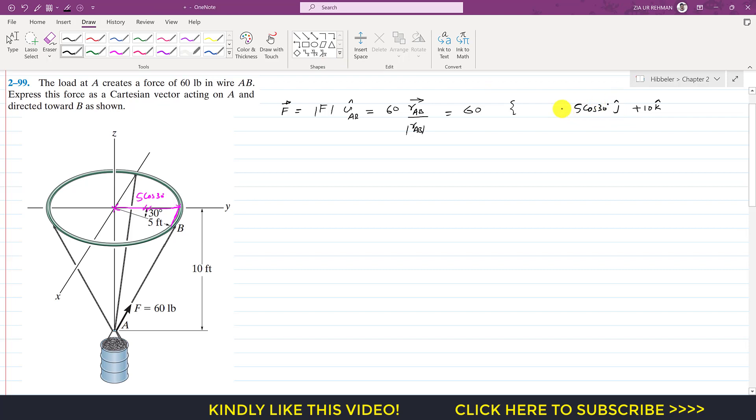Then once we reach here, we need to move this distance in the positive x direction. This distance is the sine component of this 5 feet, so we need to move 5 sin 30°. We write 5 sin 30° i. So this is the position vector.